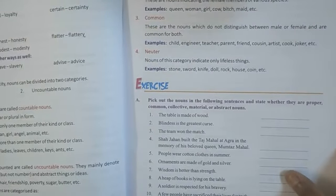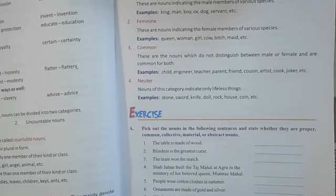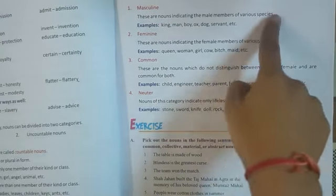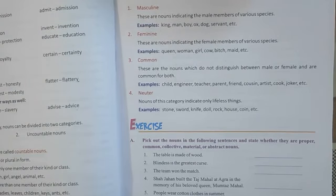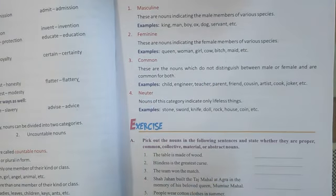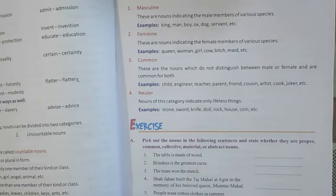I hope you are able to see properly. Masculine nouns are those indicating the male members of various species — for example: king, man, boy, ox, dog, servant. These are your masculine gender. Feminine nouns indicate the female members of various species — for example: queen, girl, woman, cow, bitch, maid. These are your feminine gender.